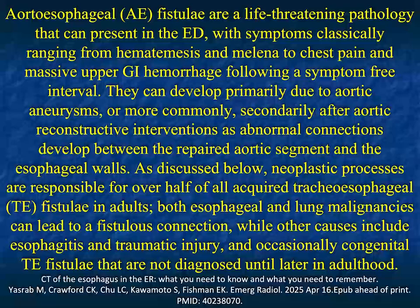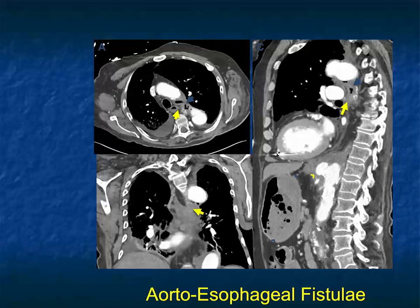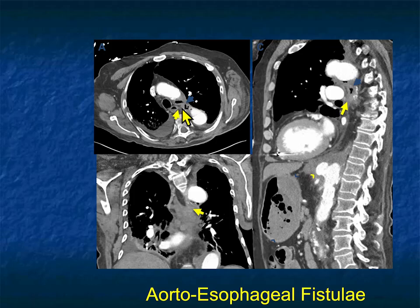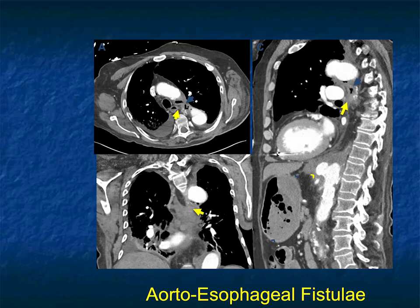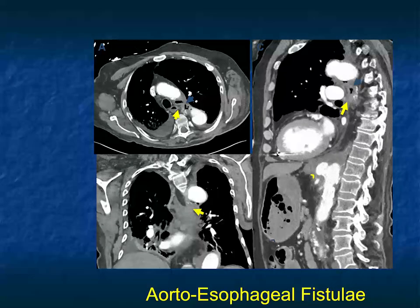Here's a nice example of an aorto-esophageal fistula. You can see multiple connections of air, irregularity of the aorta, and a mass present with multiple tracks. There are fistulas involving the esophagus — the question is whether airway and/or aorta are involved. Sometimes you can see active extravasation. Patients with aorto-esophageal fistula can bleed to death very quickly.